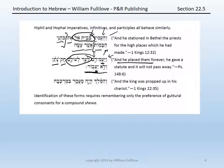Finally, from 1 Kings 22:35: va-ha-melech haya ma-amid ba-merkavah. 'And the king was' — and now the participle — a Hophal participle, masculine singular of amad, meaning 'being propped up in his chariot.' In general, to identify Hiphil and Hophal forms of first guttural verbs, you only need to remember that the guttural prefers a compound schwa. Everything else you already know about identifying Hiphils and Hophals will be true, and you should easily be able to parse these forms.